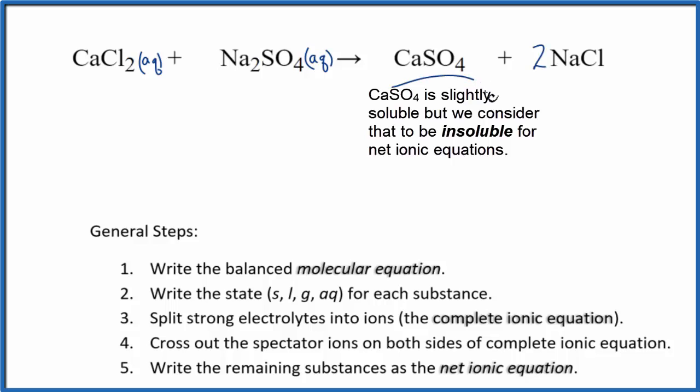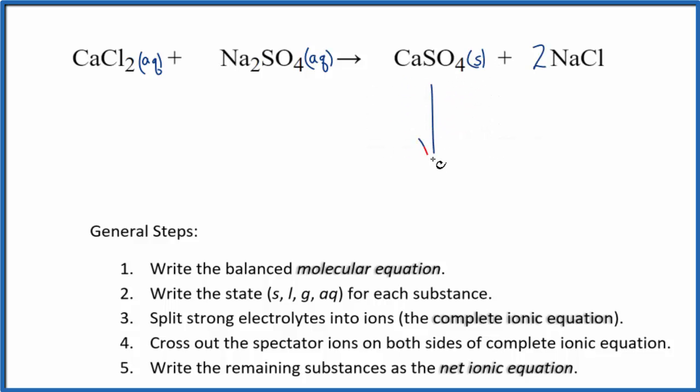These two react to produce this calcium sulfate. It's a solid, so it falls to the bottom of the test tube as a precipitate. For the sodium, we said sodium compounds are very soluble. So we have the states for our net ionic equation.